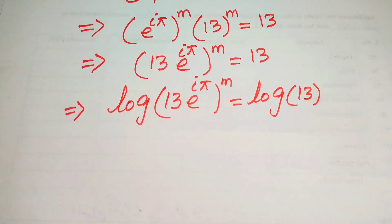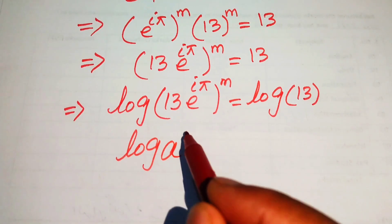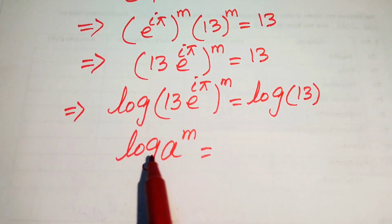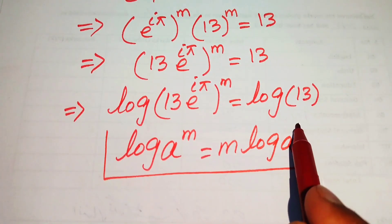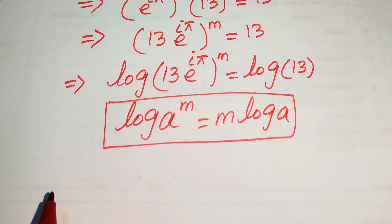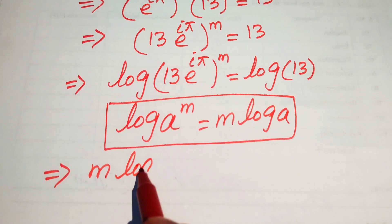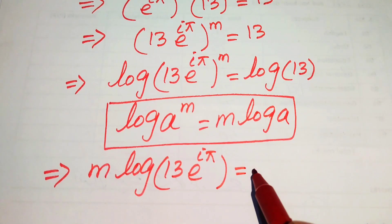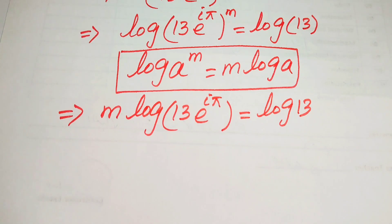We use the logarithm power rule: log(a^m) = m · log(a). Applying this property to the left-hand side, we move the exponent m to the front, writing it as m times log[13 · e^(iπ)] equals log(13).